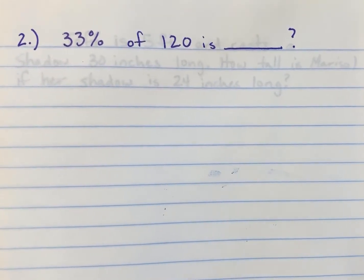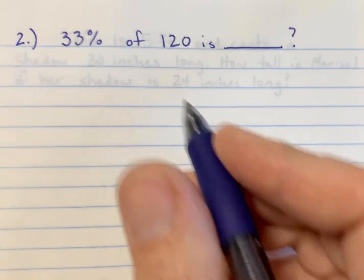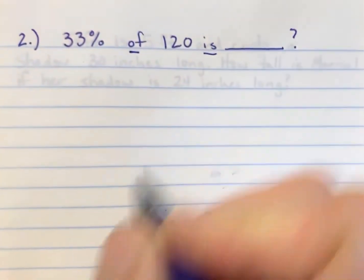All right, number two. 33% of 120 is? Now, if you notice, we have is and of in here.